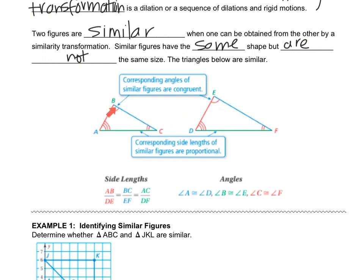Now we still have our corresponding angles, those are the angles that are in the same spot, and we still have our corresponding sides, which are the sides that are in the same spot, but they're not congruent. They're similar.